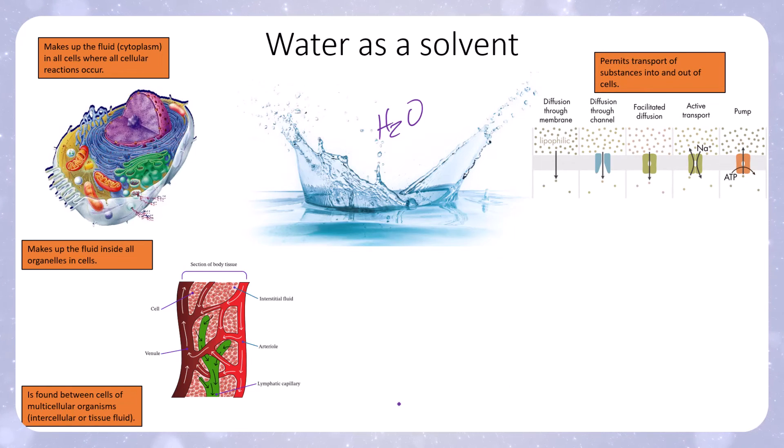Water permits transport of substances into and out of cells, whether we're talking diffusion, facilitated diffusion, active transport, or ion pumping. All of them require that the solute being transported be dissolved in solvents like water. The transport processes that move solutes within these fluids and across membranes from cytoplasm into and out of different organelles require water to be the solvent.